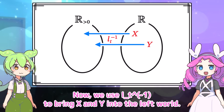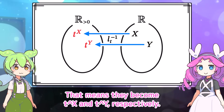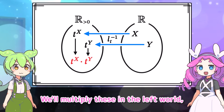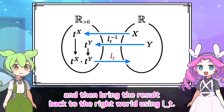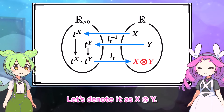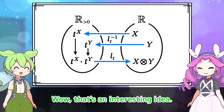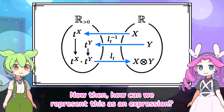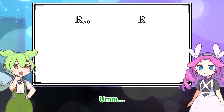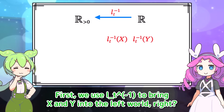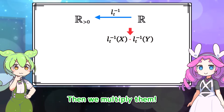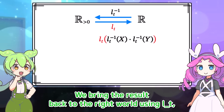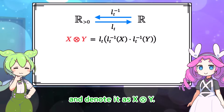What do you mean? We use L_t inverse to bring x and y into the left world — they become t to the x and t to the y respectively. We multiply these in the left world, then bring the result back to the right world using L_t. Let's denote it as x ⊗ y. That's an interesting idea — it really does seem like we're bringing multiplication from the left world into the right world through L_t. Now, how can we represent this as an expression? We use L_t inverse to bring x and y into the left world, multiply them, bring the result back using L_t, and denote it as x ⊗ y.